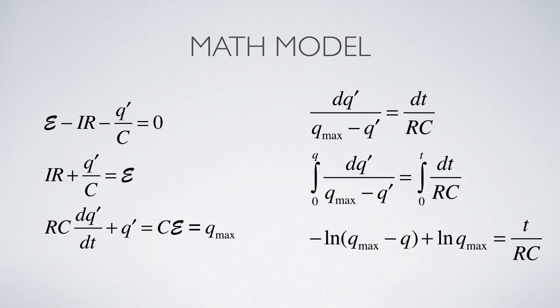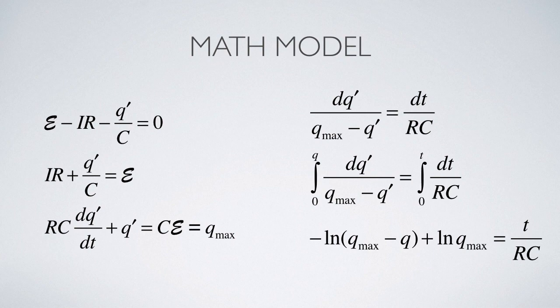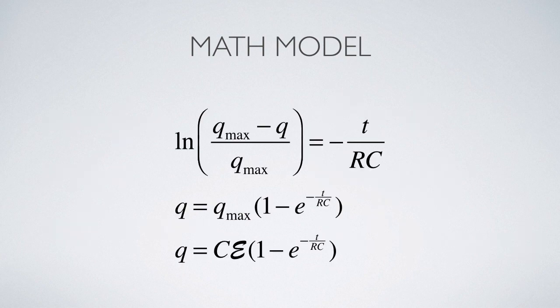Multiplying both sides by the capacitance gives C times the EMF on the right-hand side, which equals the maximum charge Q_max the capacitor can hold. We separate the variables and integrate both sides from 0 to an arbitrary time T and from 0 to Q. The left-hand integral is solved by U-substitution, yielding the natural log of (Q_max minus Q), evaluated from 0 to Q. After rearranging, we obtain the charge function: Q = CE(1 − e^(−t/RC)).